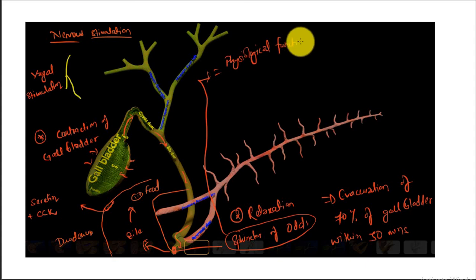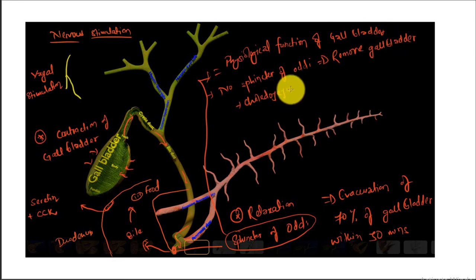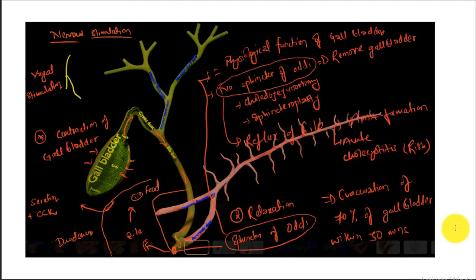The sphincter of Oddi is essential to the physiological function of the gallbladder — there is no feasible gallbladder function without the sphincter of Oddi. If the sphincter of Oddi is absent or removed, it is very important to remove the gallbladder. For example, in procedures like choledochotomy, sphincteroplasty, or sphincterotomy — where sphincteroplasty involves removal of the whole sphincter and sphincterotomy is removal of a portion — it is better to perform cholecystectomy when the sphincter of Oddi is affected, because it will result in reflux of bile, stone formation, recurrent biliary colic, and acute cholecystitis.